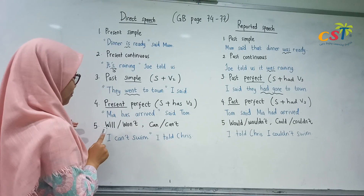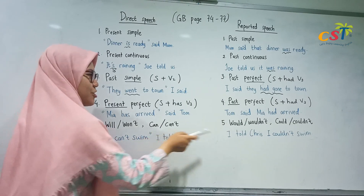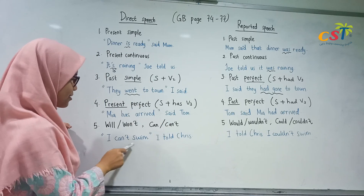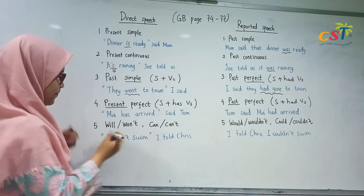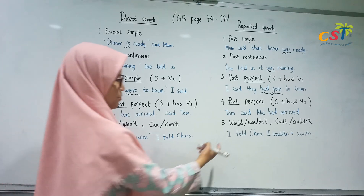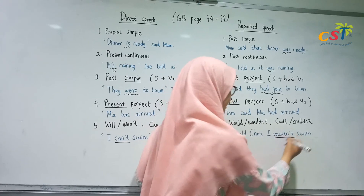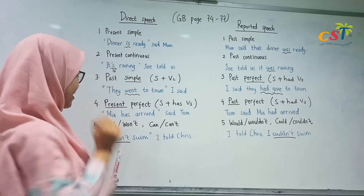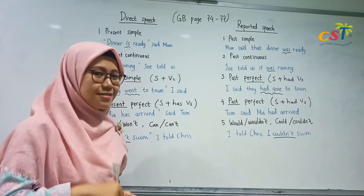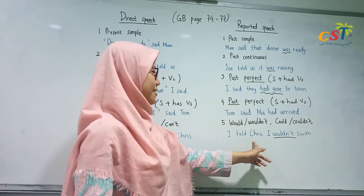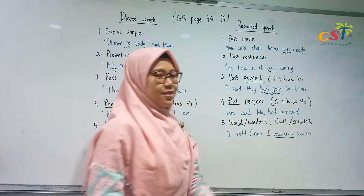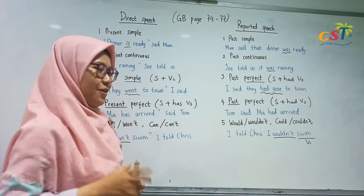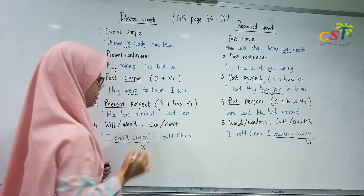Last one: 'will' or 'won't' and 'can' or 'can't' change into 'would' or 'wouldn't' and 'could' or 'couldn't.' For example: 'I can't swim. I told Chris...' — you change it into 'I told Chris I couldn't swim.' Can't changes into couldn't. Also, 'I will go to the cinema' becomes 'I told Chris I would go to the cinema.' Remember, after 'could' or 'would,' it is followed by verb one. This is the same after 'can't' — also followed by verb one.